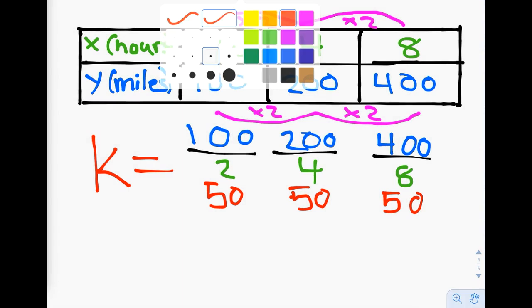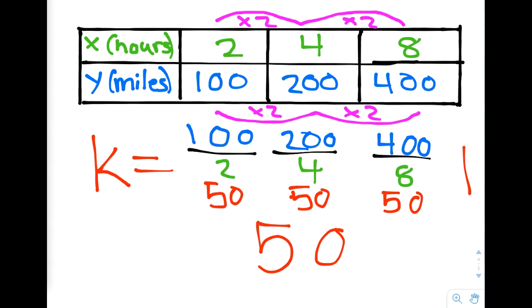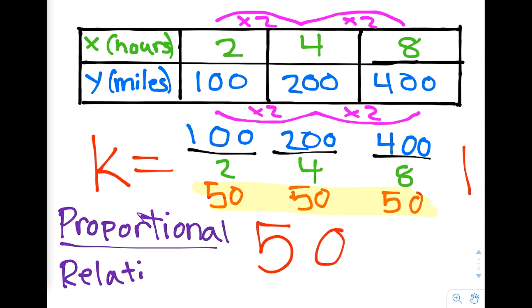In this example, we know that the relationship in this table is proportional because the constant of proportionality is the same every time. If you're using a table and the constant of proportionality isn't the same every time, then the relationship is not proportional.